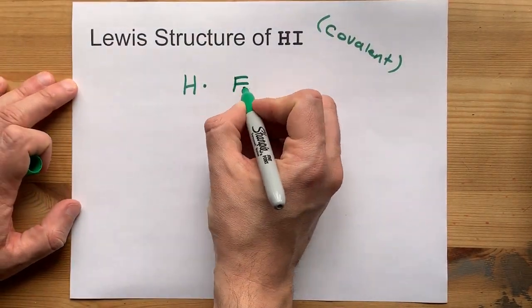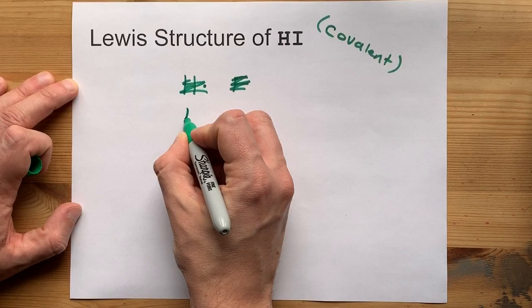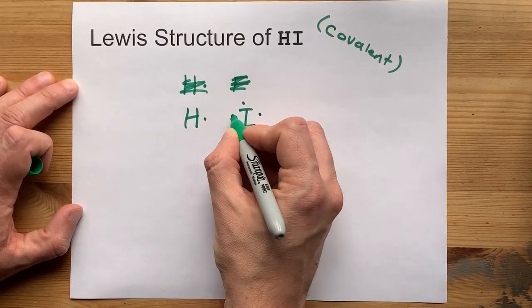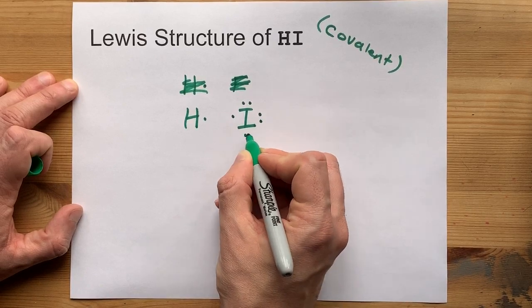Anyways, I'm just gonna... whoops, I want iodine. Huh, that's embarrassing. Iodine has one, two, three, four, five, six, seven.